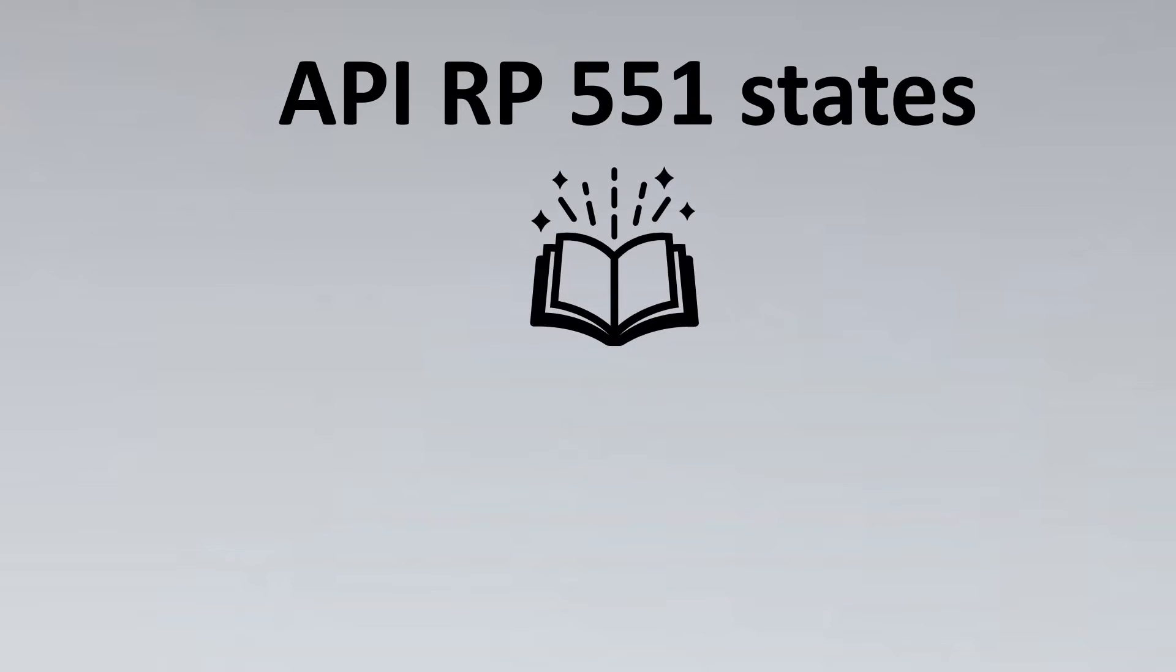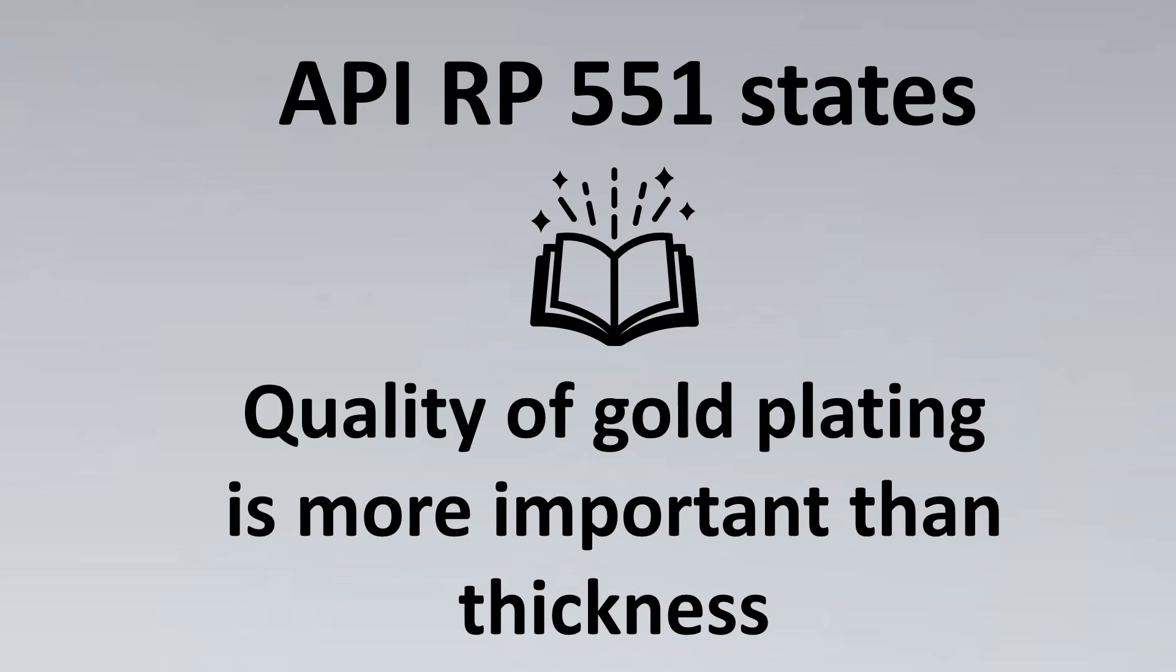API standard states that it's the quality of the gold plating that's more important than the thickness. The thickness might vary depending on your corrosion allowance of the surface or other factors required, but especially care must be taken that gold plating must be done and the thickness should be such that the hydrogen atom should not permeate. The thumb rules can be used if there is no other design basis or criteria available to us.